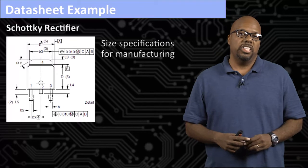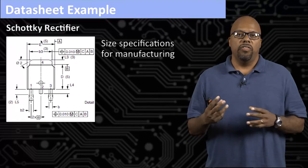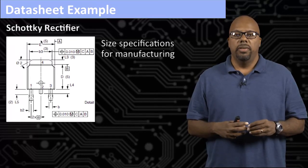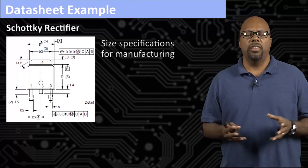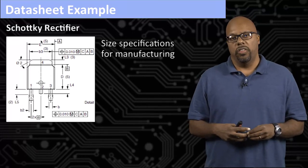One thing that you always find inside a datasheet is the physical dimensions of the part because they always want to tell you how do you build it into a bigger system. How's it going to connect to everything? You always want to know that.